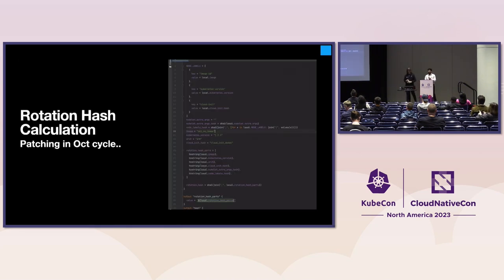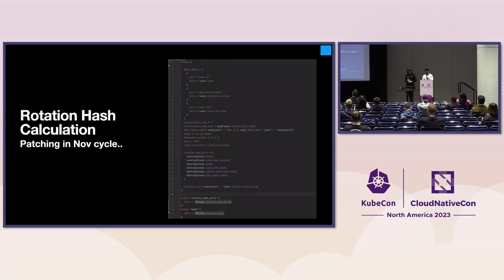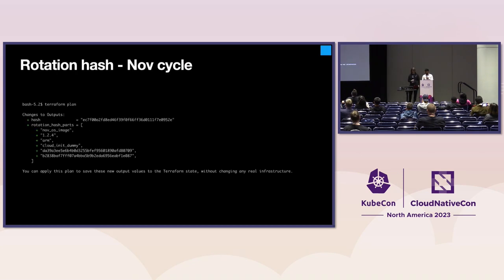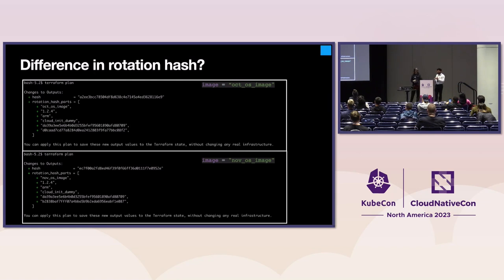Here's a simple example of how we implemented the rotation hash as part of our monthly patching cycle. Every month we have a different OS image — you can see on line 20 the image is the October OS image, and it calculates a rotation hash. We calculate a SHA out of the rotation hash parts. Comparing October to November: the OS image changes in November, and you can see the rotation hash for October is different from November. The only field that changed was the OS image. This helped us version our infrastructure and we applied it to our security patching.